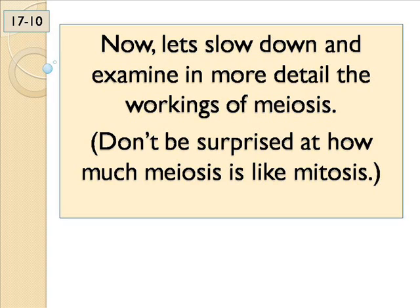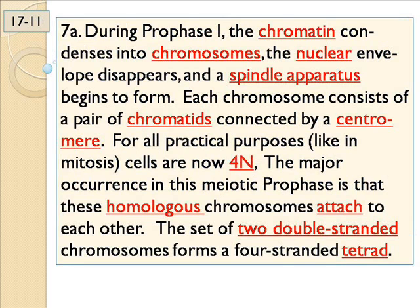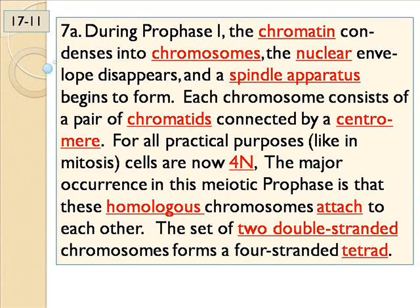Don't be surprised if what you're seeing in meiosis looks a lot like mitosis, because they are very similar — except meiosis has two divisions. Just like in prophase of mitosis, the chromatin becomes visible; spindle fibers start to form; centrosomes go apart. You couldn't tell if this is mitosis or the first phase of meiosis just from looking at prophase. When those cells divide a second time and you get four, that's when you know it's meiosis.